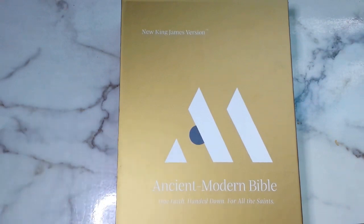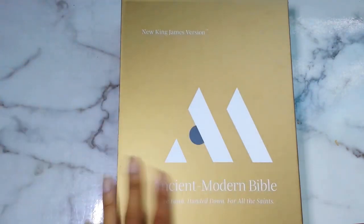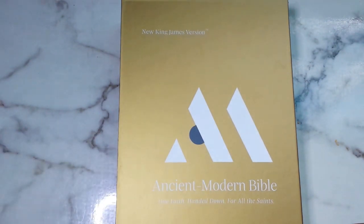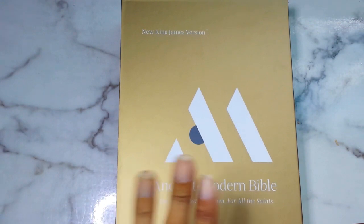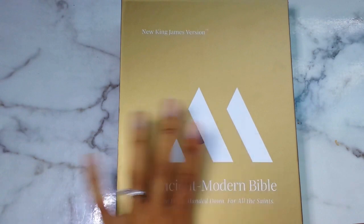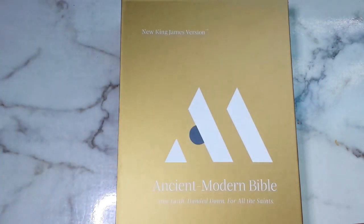This Bible is called the NKJV Ancient Modern Bible. It says 'One Faith Handed Down For All Saints.' This is by Thomas Nelson, as we all know. I am obsessed with Thomas Nelson Bibles. This came out October 2nd, 2018. It comes in three editions: the white hardcover which I have, a leather brown, and a gray cloth kind of style.